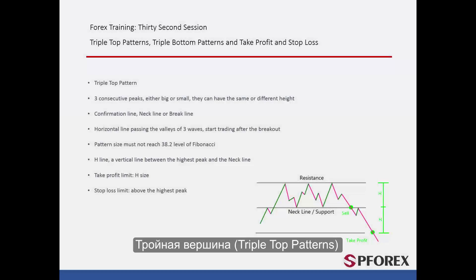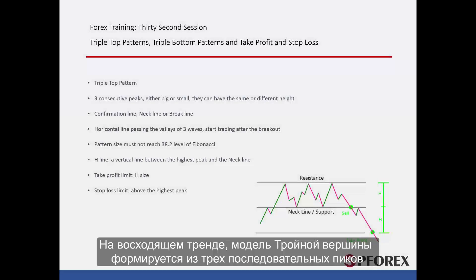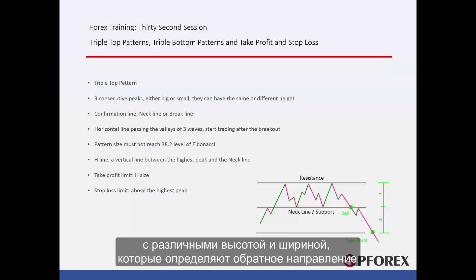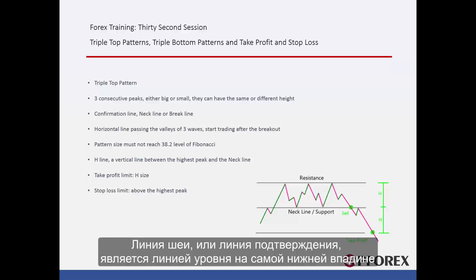Triple top patterns: On an uptrend direction, a triple top pattern is formed from three consecutive peaks with various height and width, which indicate a reverse direction. The neckline or confirmation line is a level line on the most bottom valley.